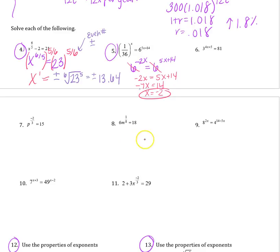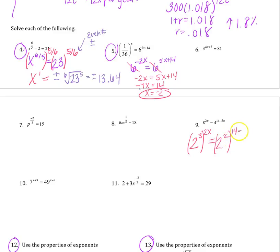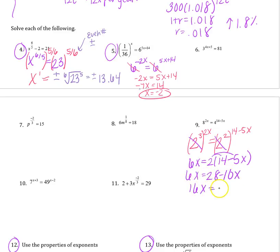For a problem with bases 8 and 4, rewrite both using base 2. Eight is 2 cubed raised to the 2x, and 4 is 2 squared times the quantity 14 minus 5x. Drop the base and apply the power-to-a-power rule — multiply the exponents: 3 times 2x gives 6x on the left, and 2 times 14 minus 5x distributes to 28 minus 10x on the right. Solving: 16x equals 28, so x equals 28 over 16, or 1.75.